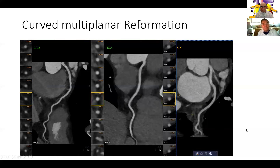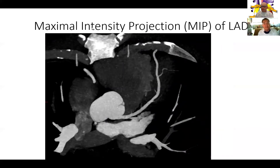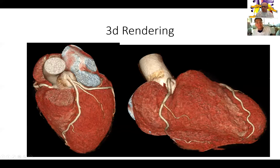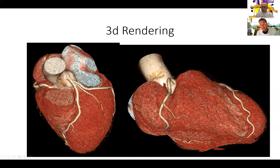Finally, there is another format: the maximum intensity projection (MIP). This is a thick slab of slices where the computer selects the maximal intensity. It is not very helpful for identifying specific lesions, but very useful for visualizing long segments of the artery and seeing all the segments and branches. It is very nice for pictures and displays fistulas, anomalous origin of the coronaries, and the different branches such as the ramus or the diagonal. You can see the origin of the right and the left coronary very well, and rotating the image shows the RCA and its distal branches.